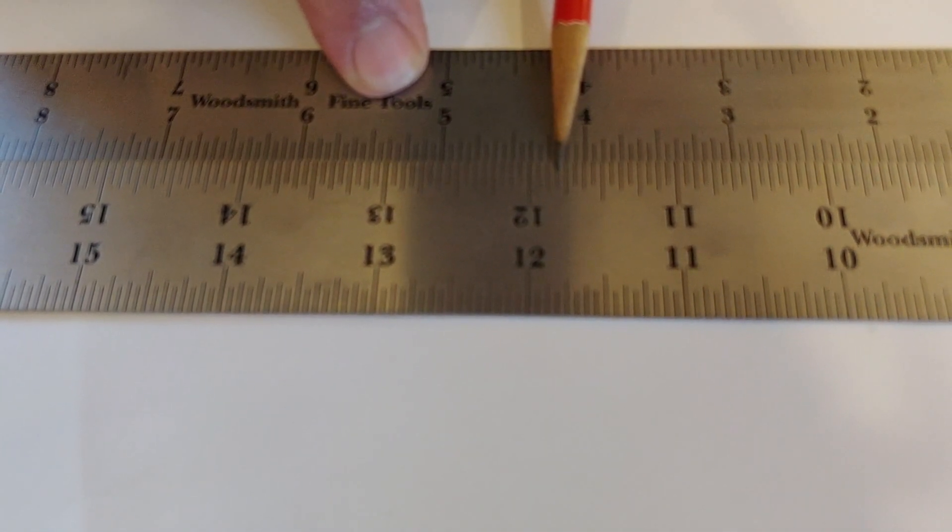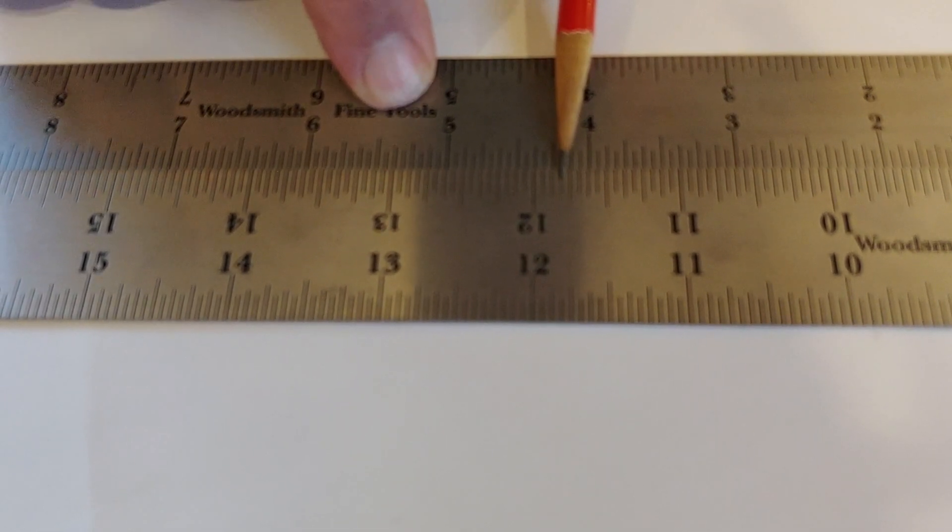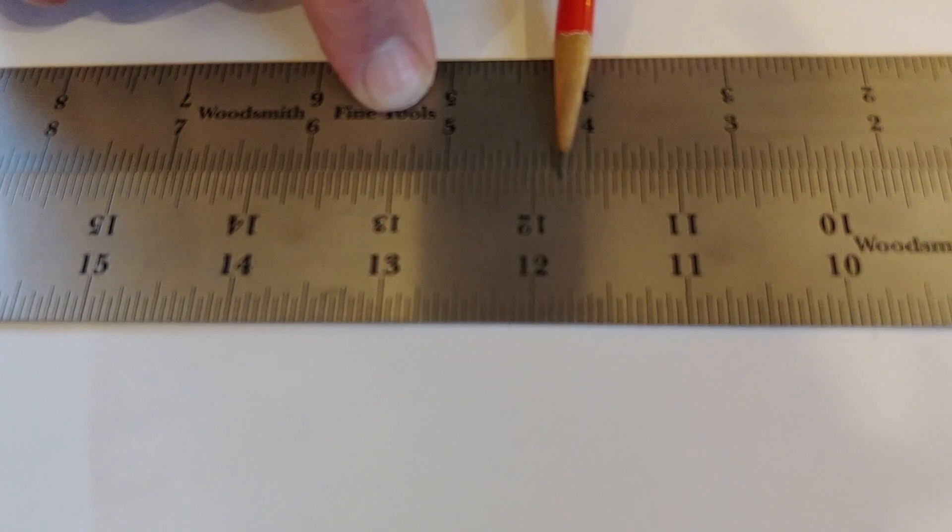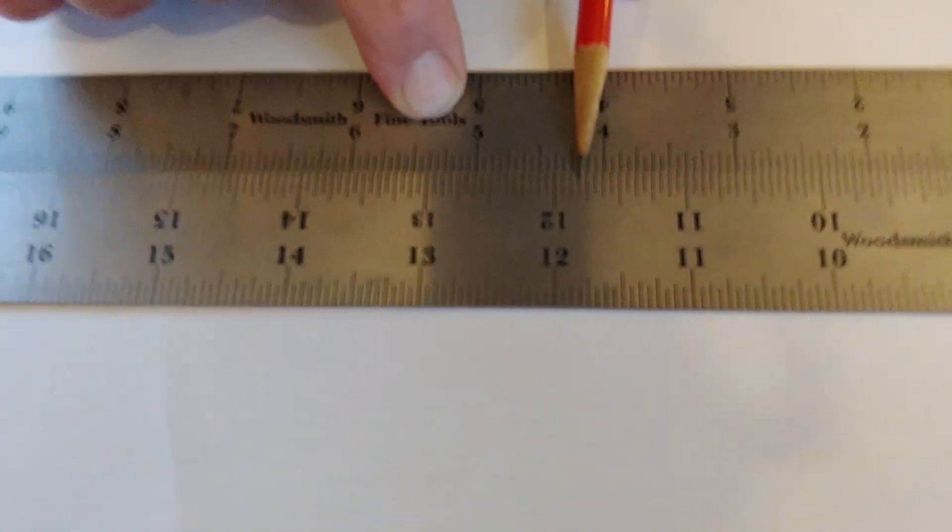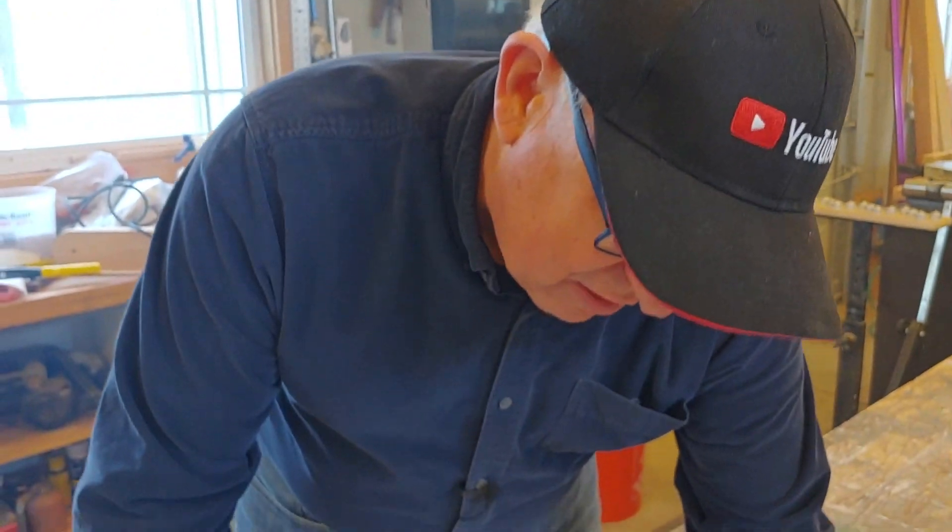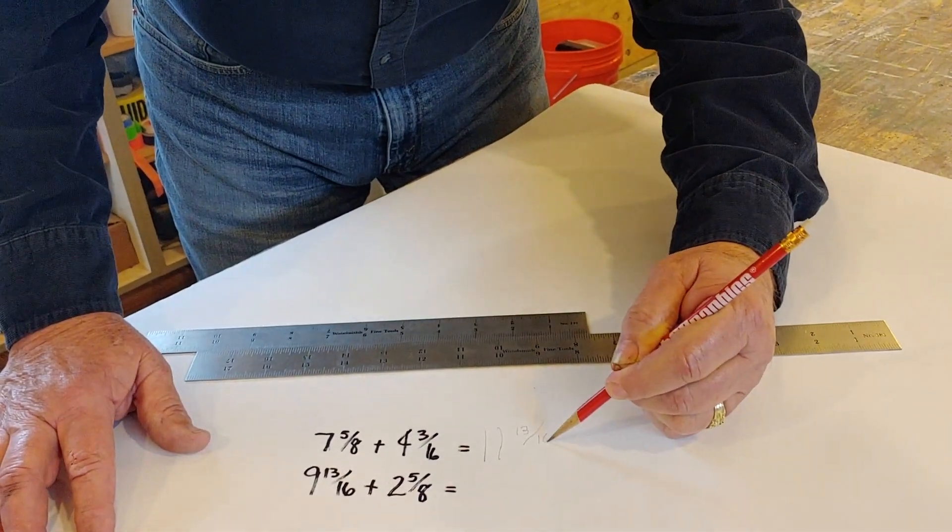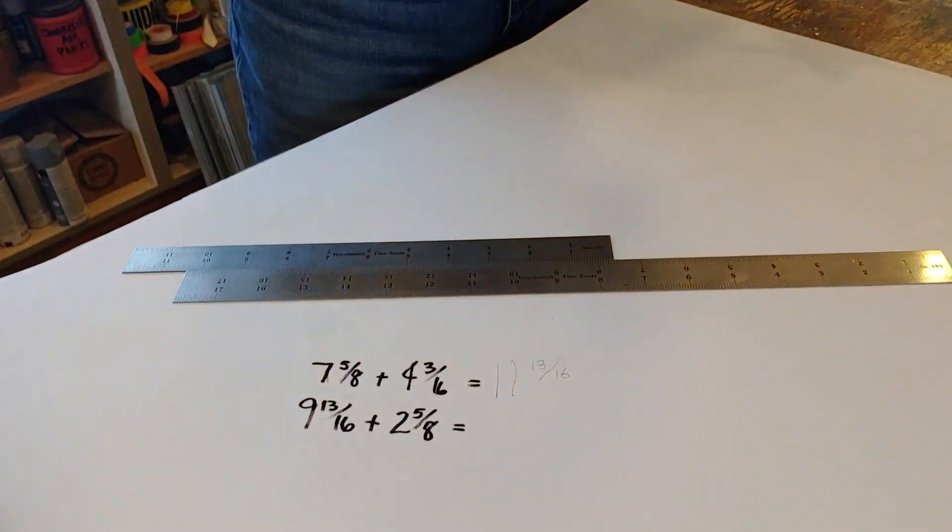I am at 11 and I go to 3 quarters, but that's not right. It's actually 13/16ths. So 11 and 13/16ths. Not bad for writing upside down, right? And the rulers did that.